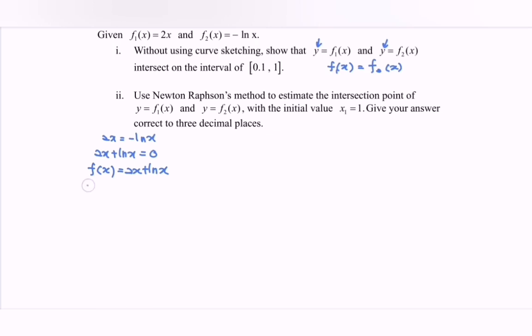Next, find f'(x) = 2 + 1/x. Rewrite this as (2x + 1)/x. That is the first derivative. Next, substitute: f(0.1) = -2.1 and f(1) = 2, which gives opposite signs.